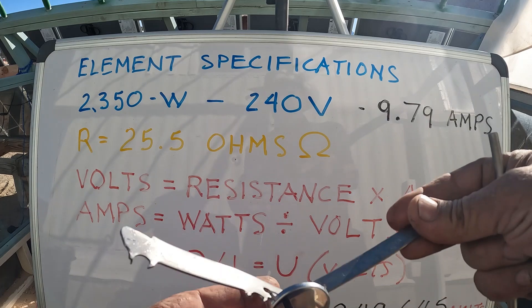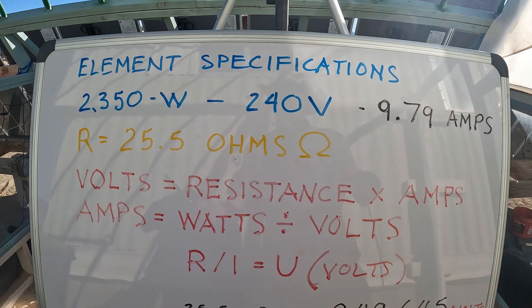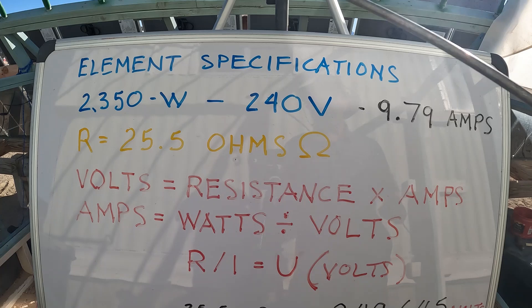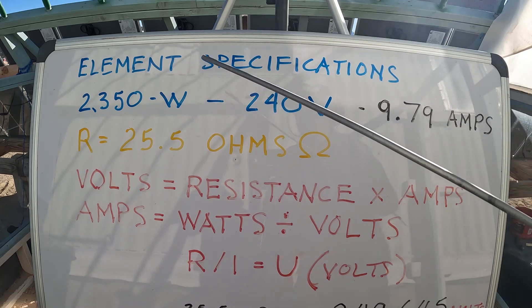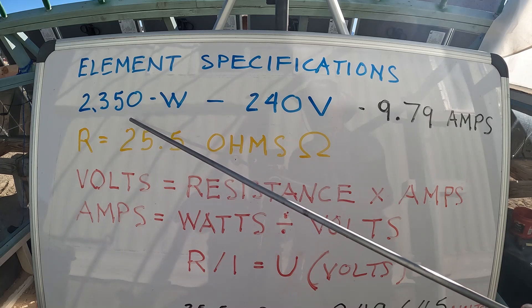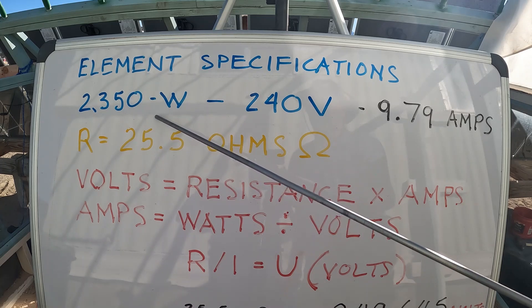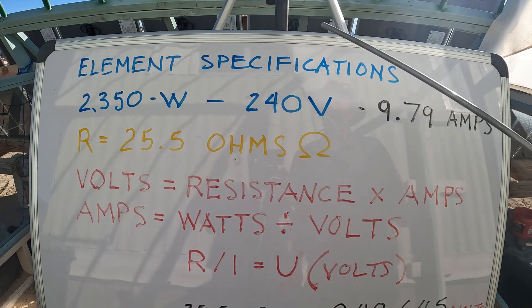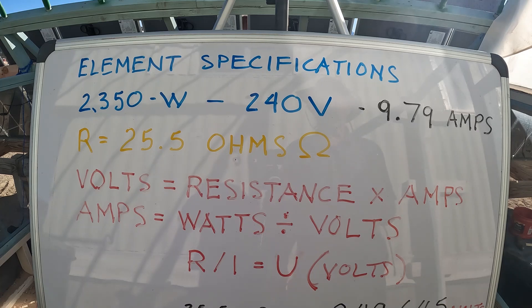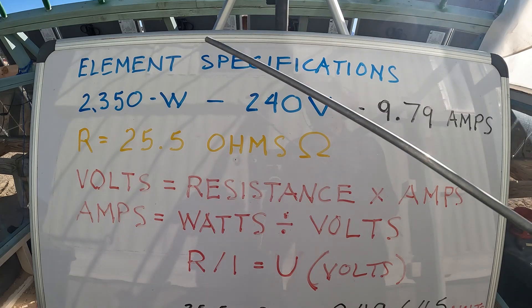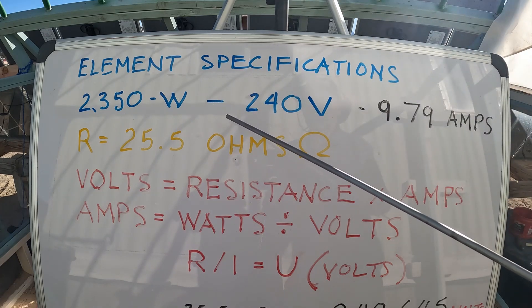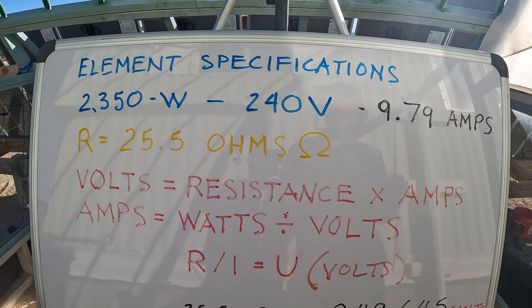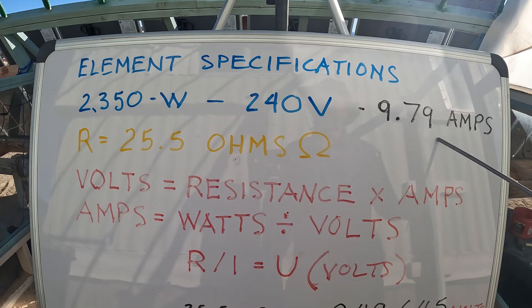Looking at the element specifications on this bracket: the element tells us it can handle 2350 watts at 240 volts. I used part of Ohm's Law — voltage times amperage equals wattage — that's the one I've been using for years.